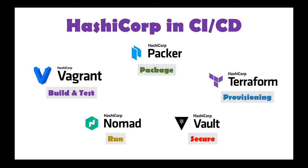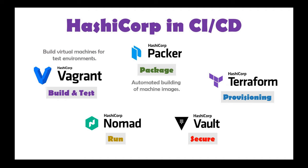Why is Vagrant a build and test tool? Vagrant helps you build virtual machines for testing your environment. It's easy — you can write infrastructure as code in a kind of YAML file, specify how many VMs you want to spin up, and put it into your pipeline. It can be used for testing a lot of your environments. I won't go in depth on how to set up Vagrant here, but let me know in the comments if you'd like a dedicated video.